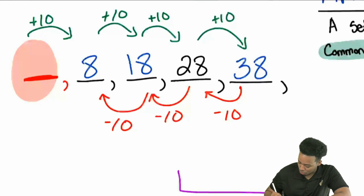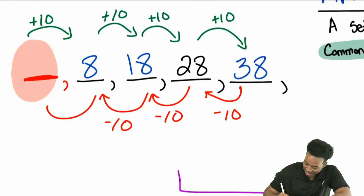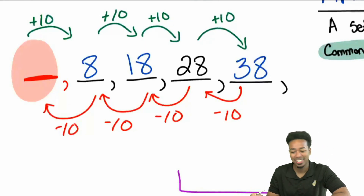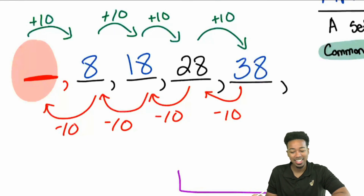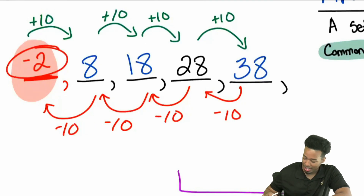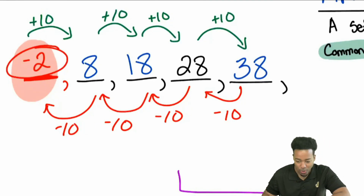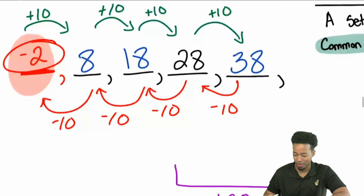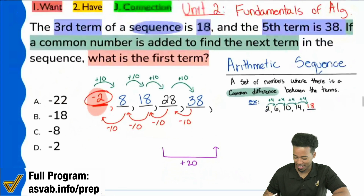The second term is 8. And if we subtract 10 again, that's going to be negative 2 — not negative 8, that's a trick answer. Negative 2 will be the answer: that is the first term.